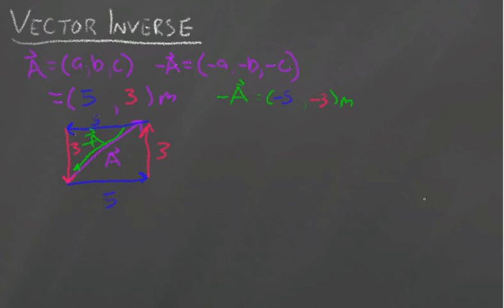So why do we call it the inverse? Because let's say we take A and we subtract A from it. Well, A - A is zero in the x component and then the same for the y component, so we end up with (0, 0).